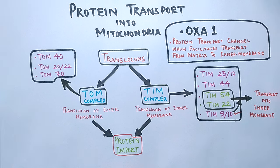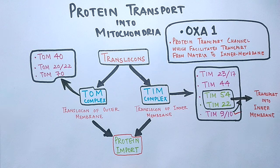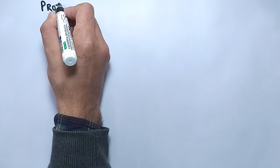OXA-1 mediates the insertion of both mitochondrial and nuclear-encoded proteins from the matrix into the inner membrane. When a protein molecule contains both the matrix targeting sequence and an OXA targeting sequence, the protein is first transported to the matrix, and then taken into the inner membrane with the help of OXA-1. This is how OXA-1 insertase mediates transport from the matrix into the inner membrane.